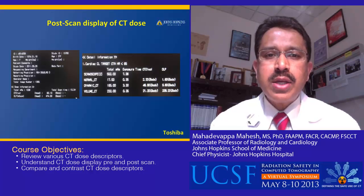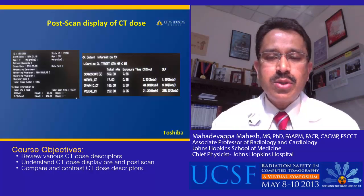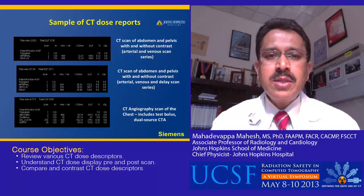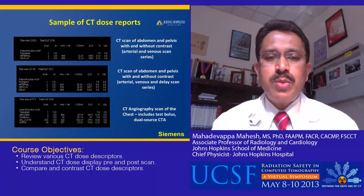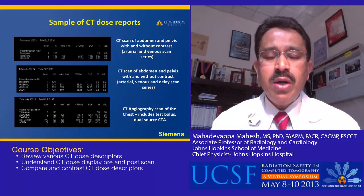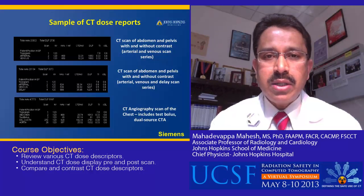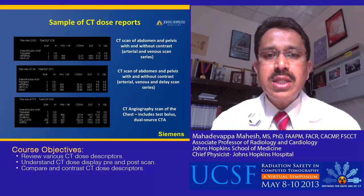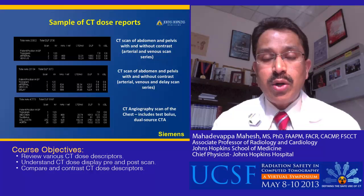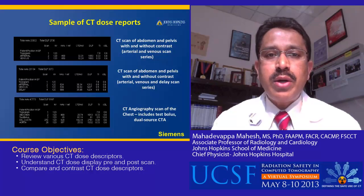Shown here is a sample post-scan display from a particular manufacturer. This dose report shows the total mAs value used in different scan series, along with the CTDIvol and the DLP. Another slide shows a different CT dose report from a different manufacturer, which is more detailed — providing not only the type of series done in the exam but also, for each line item, the selected kV, selected mA, along with the CTDIvol and DLP. This information can be used for calculating effective dose and organ doses, or for quality control purposes.